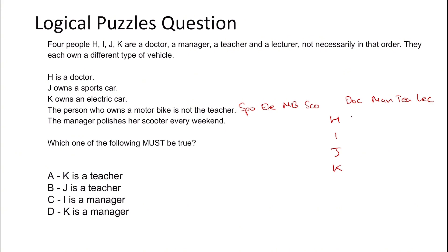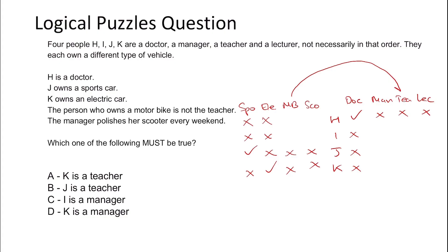The person who owns a motorbike is not the teacher. This doesn't mention H, I, J, or K directly. The best way to present it is to draw an arrow over the top, and since it says 'is not,' we put an X through it. Later, when we find out who has the motorbike or who the teacher is, we can rule out the other criteria. The manager polishes a scooter every weekend — again, draw an arrow over the top. Since we know H is not the manager, we can conclude H must not have the scooter either.